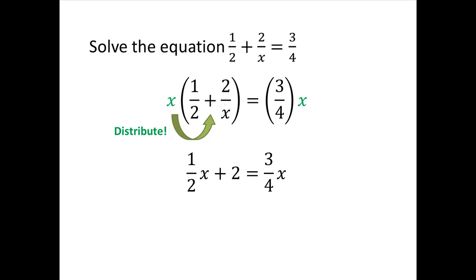Now we treat this like a normal linear equation. We want to get x by itself, so we'll subtract 3 fourths x from both sides. We'll also subtract 2 from both sides. We'll kill two birds with one stone and try to end up with x by itself.